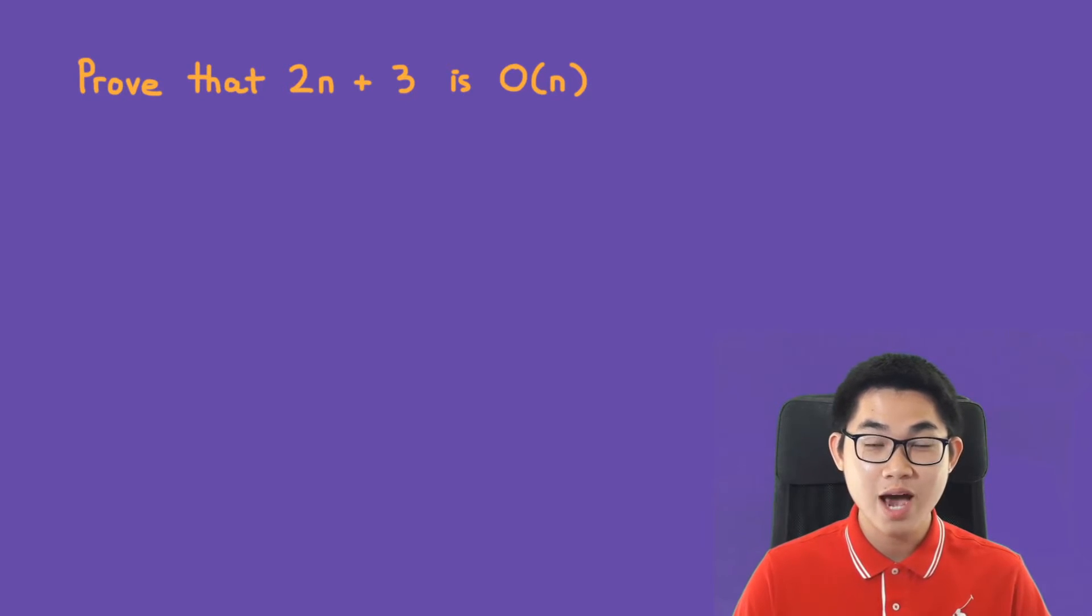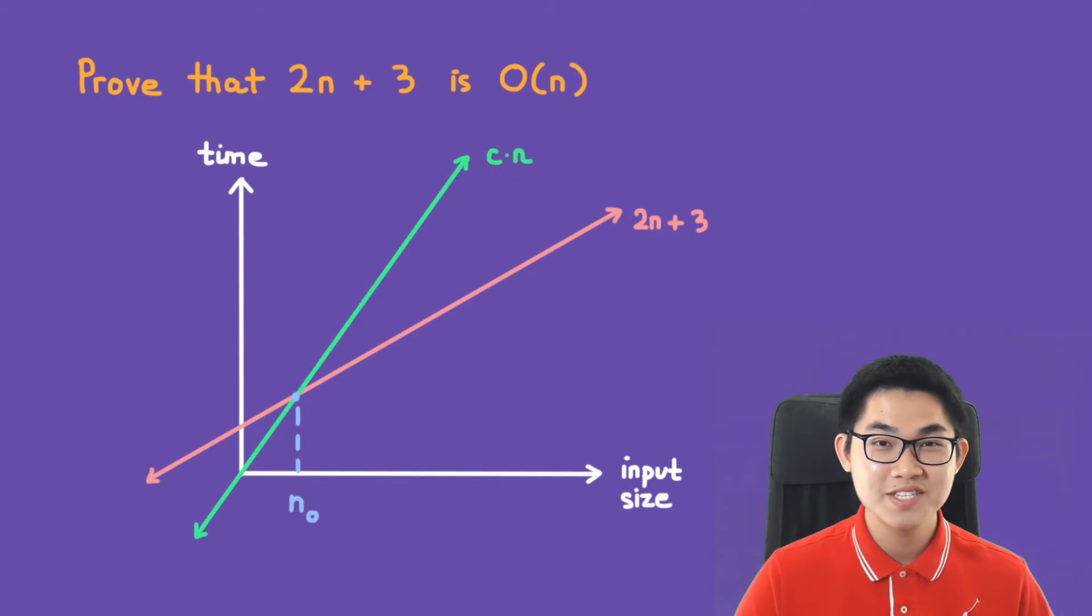In this video I'm going to show you how to prove or disprove big O. We're going to start off with this problem which is prove that 2n plus 3 is O(n). It's very important to understand what they want you to do.